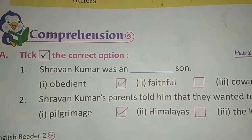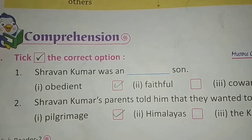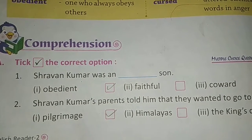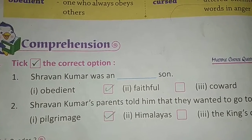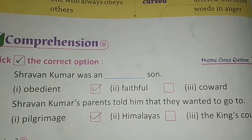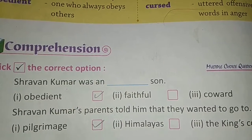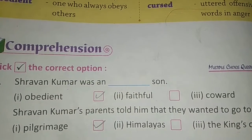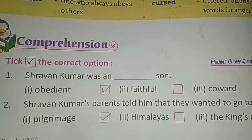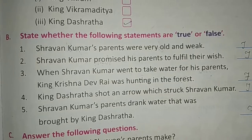Now, tick the correct option. First one is: Shravan Kumar was a blank son. Shravan Kumar kaisa beta tha? Options are: Obedient, Faithful, Coward. So Shravan Kumar was an Obedient son. Likewise, you have to revise the remaining two tick-the-correct-option questions.